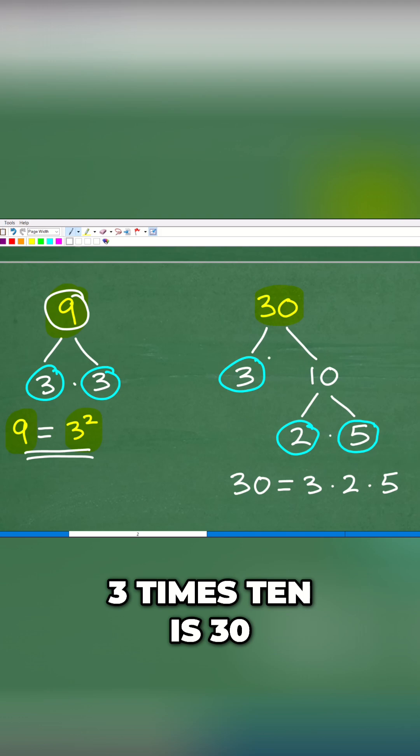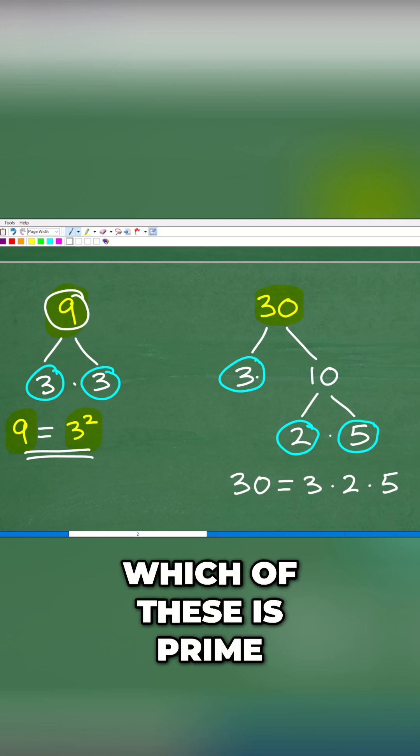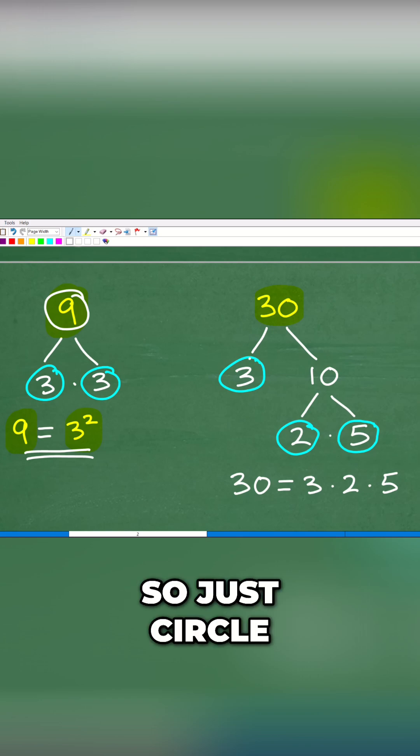So I'm looking at my factors here. Which of these is prime? Well, 3 is prime. So just circle the prime factor when you've reached it when you're factoring. This is called a factor tree. So we'll circle this.